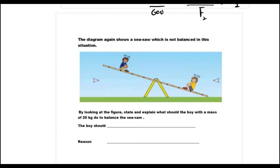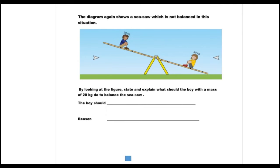The next question shows a seesaw which is not balanced. There is no balance, so the torque on one side is more and the other side is less. We can clearly see the side that is downwards has more torque. By looking at the figure, explain what should the boy with a mass of 20 kg do?